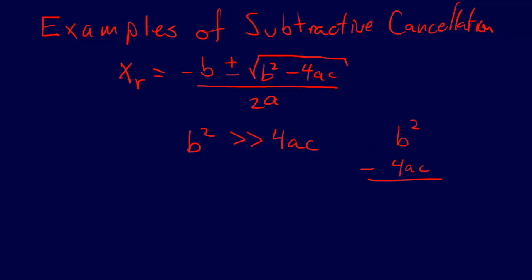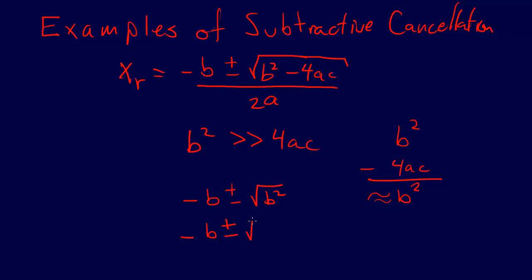But we still have the problem of subtractive cancellation — just not in that term. To explain: if b squared is much larger than 4ac, then the square root of b squared minus 4ac is basically going to be approximately equal to b squared, so its square root is approximately b. That means we're going to have negative b plus or minus approximately b.